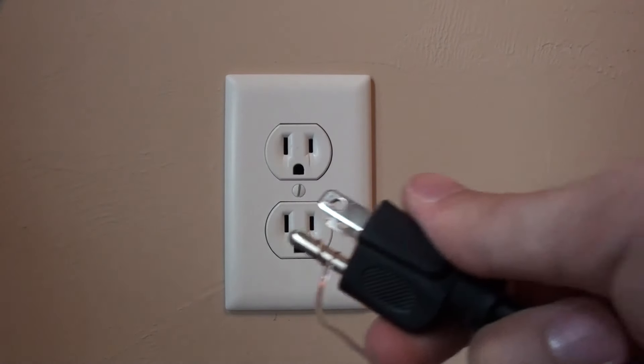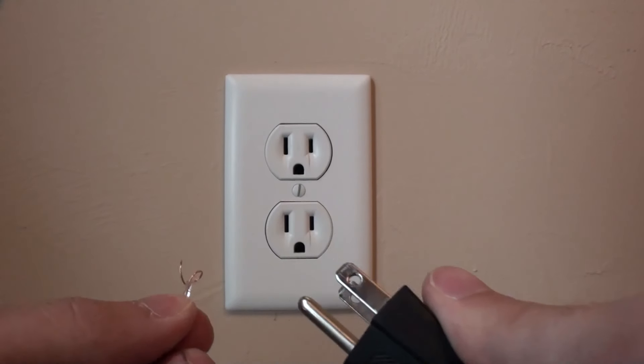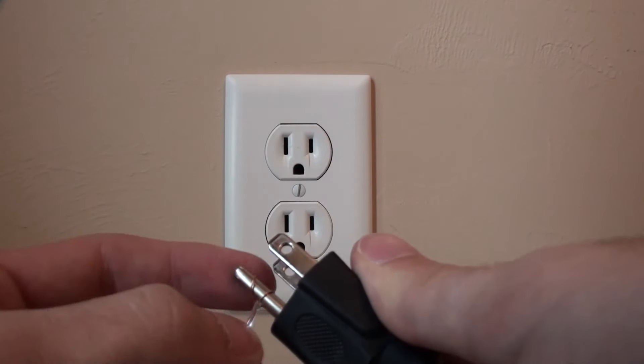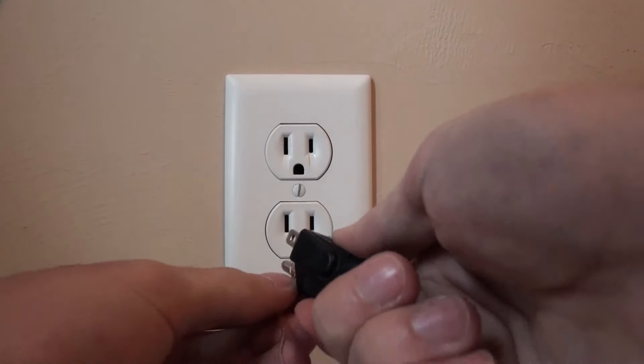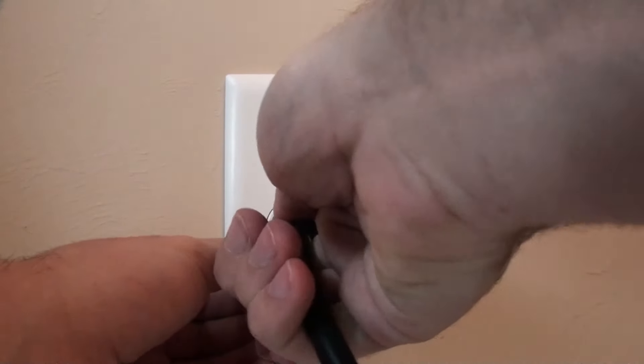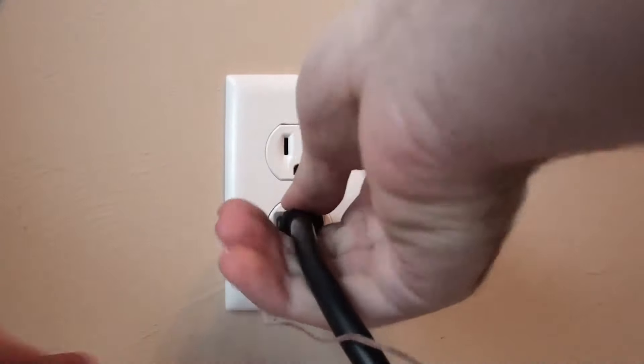Now what I did for the ground is I just took my ground wire and wrapped it around the ground for this plug. And we'll just plug it in there. And now we have ground.